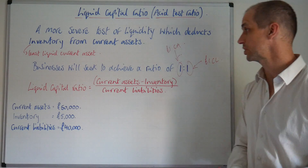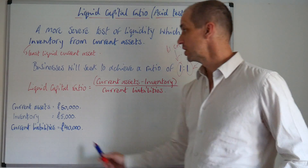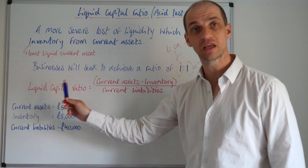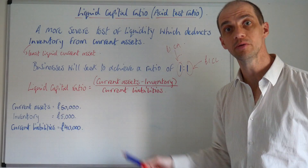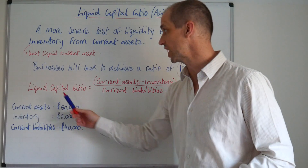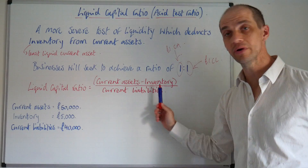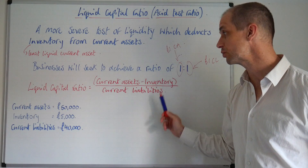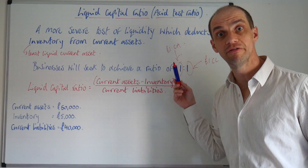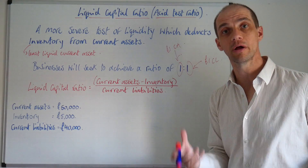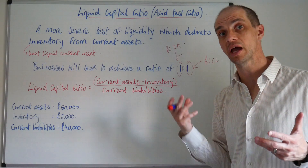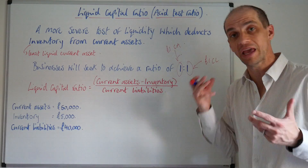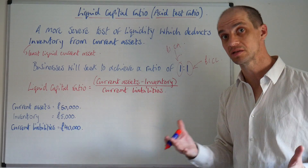In terms of actually calculating the liquid capital ratio or acid test ratio, it is simply your current assets minus your inventory, divided by your current liabilities. That formula will enable you to calculate this very easily.